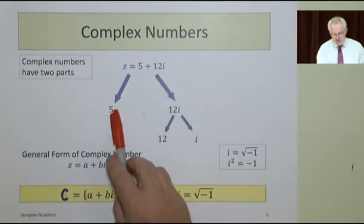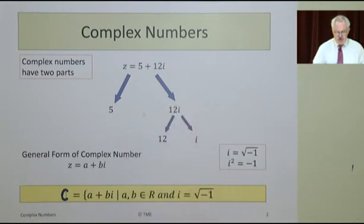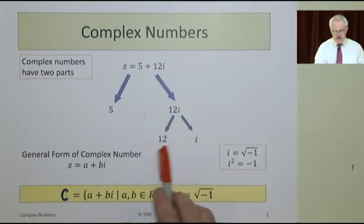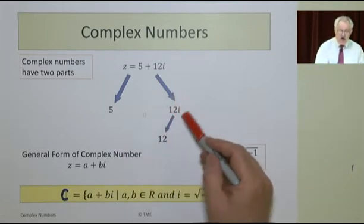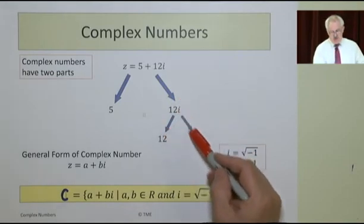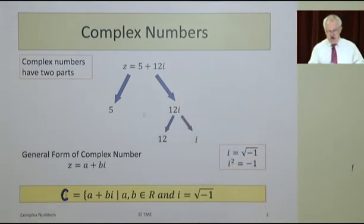Here's the first part, 5, and the second part is 12i and it breaks into the two parts. The 12i then has a real coefficient. There's 12 of them and i is the imaginary part.